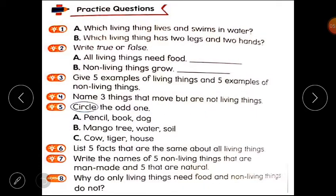Now students, you have to complete practice question number three: Give five examples of living things and five examples of non-living things. Five examples of living things like girl, boy, animal, baby. Five examples of non-living things like table, chair, pen, bus, fan. Clear?